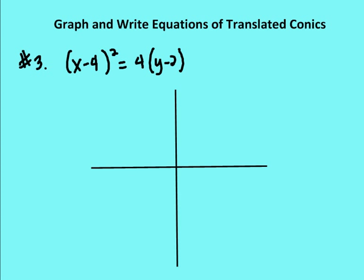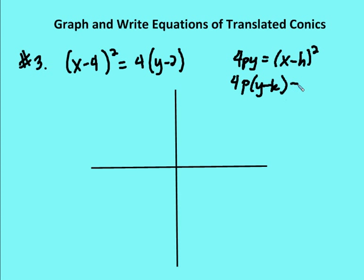The first thing we need to do is figure out what type of conic this is. When we have just one squared variable, we're going to have a parabola. The formula is 4p times y minus k is equal to x minus h squared. In this case, the k value will be 2.